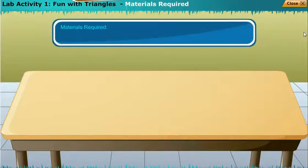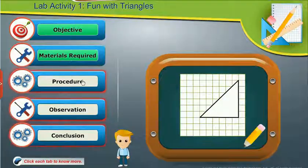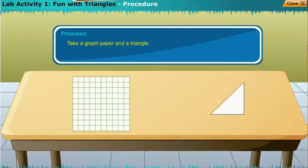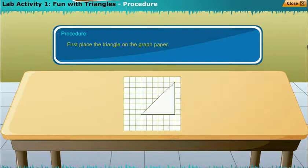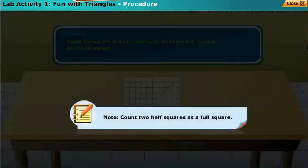Materials required: The materials used in this lab activity are centimeter graph paper and triangle. Procedure: Take a graph paper and a triangle. First place the triangle on the graph paper. Count the number of total squares and count two half squares as one full square. Note: Count two half squares as a full square.